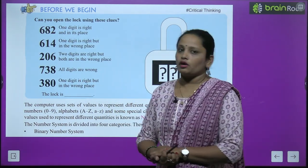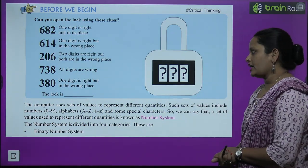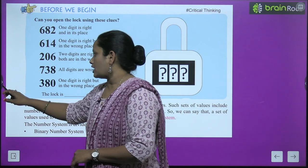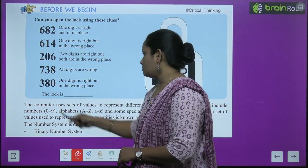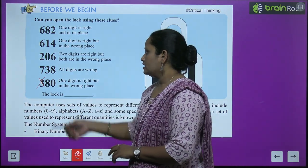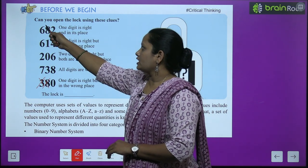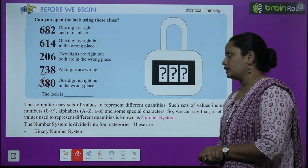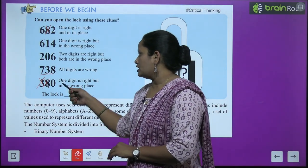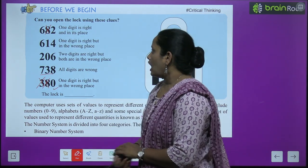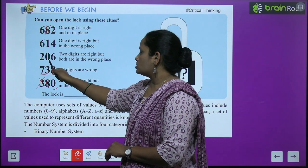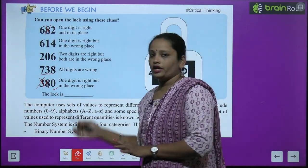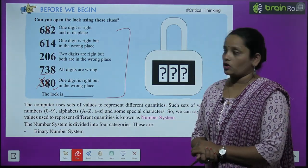One digit is right but in the wrong place. Now we have to figure out which digit is correct. The digit could be 3, 8, or 0, but we are told the digits in one code are all wrong — so 3 will not appear, 8 will not appear either. Since 738 has all wrong numbers, none of those digits will appear in the lock code. The remaining digit — one digit is right but in the wrong place — so 0 will be in the answer but not in its current position.